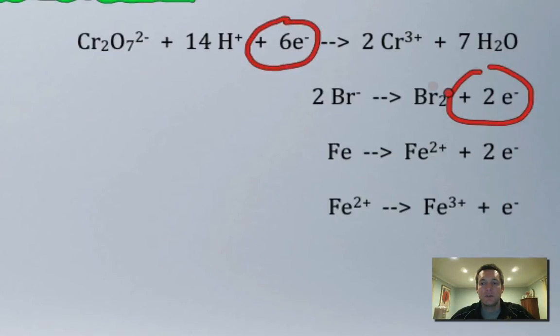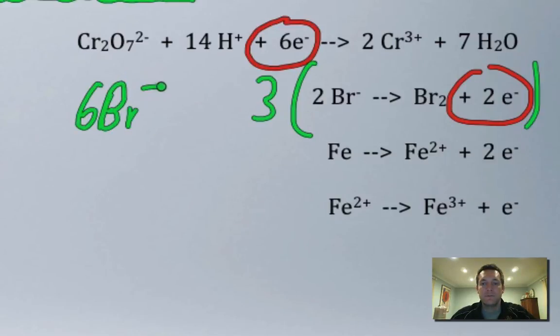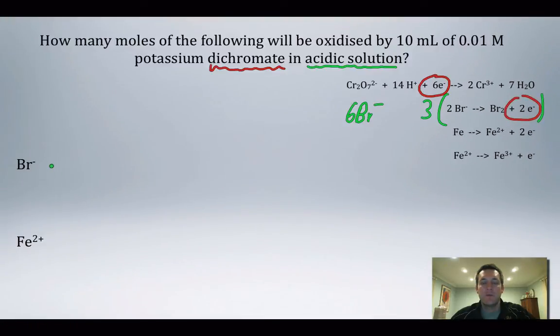We can see we've got two and six electrons there. To make the number of electrons the same, we're going to multiply this whole equation by three, and that's going to give me six bromide ions. I'm not really interested in the other things at the moment because I'm trying to compare the number of moles of this to the number of moles of dichromate.